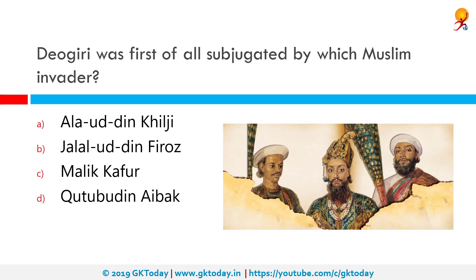Deogiri was first of all subjugated by which Muslim invader? The correct answer is Alauddin Khilji. The first attack south of the Narmada was made in 1294 AD by Alauddin Khilji, who marched 700 miles into Berar and Khandesh and compelled Raja Ram Chandra Deva and the Yadavas.